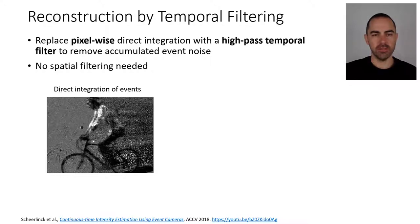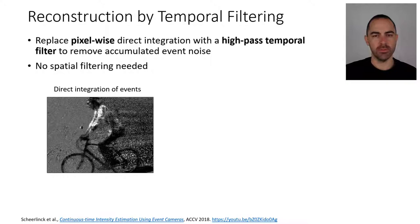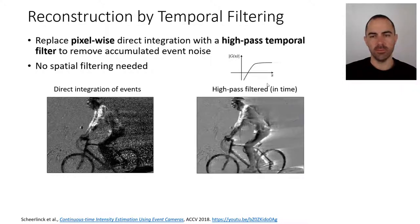That's what's represented on the image on the left — if you do that, you can see the bike rider, but there is a lot of event noise and this noise accumulates. So pixel-wise direct integration is not a good idea. Instead, what the people from ANU propose is to use a high-pass temporal filter to remove this accumulated event noise. The result is the image on the right, and as you can see, a considerable amount of noise has been removed — this is filtering in time, not in space.